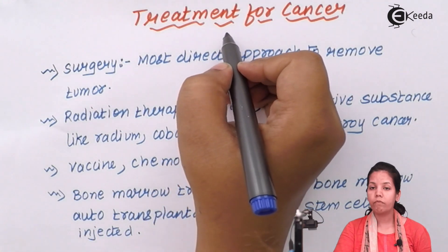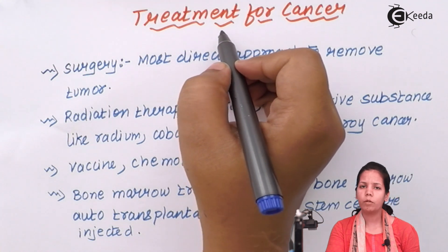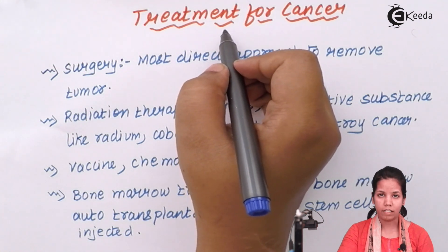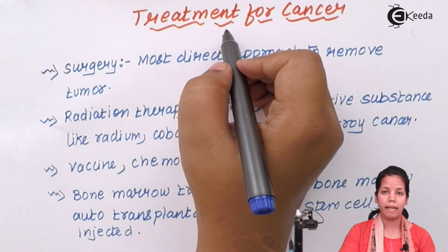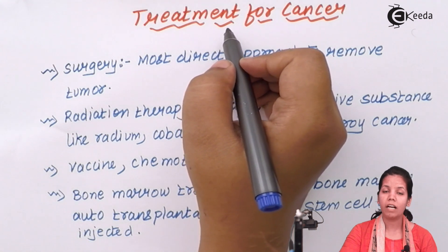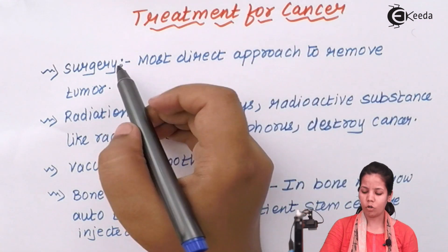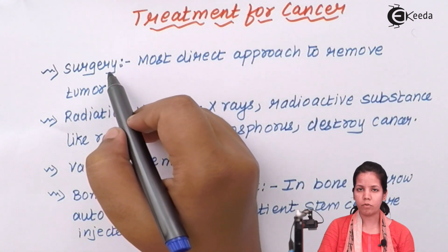Treatment for cancer: depending upon the type of cancer an individual has developed — whether it is malignant, benign, leukemia, lymphoma, or sarcoma — there are different options available for treatment. Most of them include surgery, radiation therapy, vaccines, chemotherapy, and bone marrow transplant.